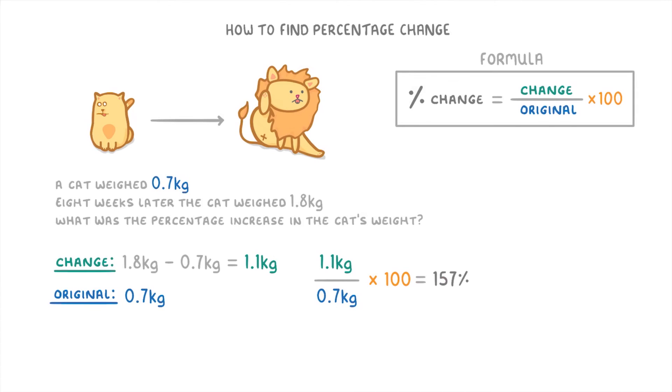And don't worry here that our percentage is bigger than 100%. It just means that the cat's weight has more than doubled. A 100% increase means that something doubles. So if something more than doubles, then the percentage increase will be more than 100%.